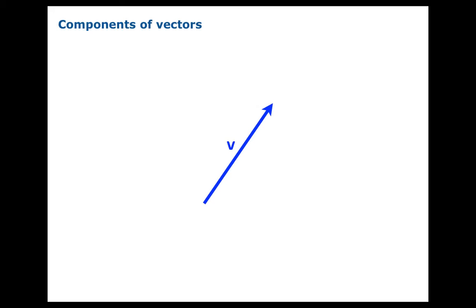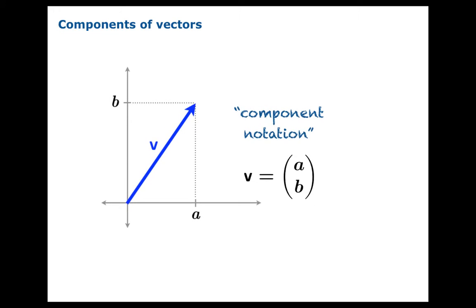If you were to place a vector so that the tail of the vector lies at the origin, then the tip of the vector would have coordinates. Those coordinates we will call the components of the vector. We could collect these components together into a column with parentheses on the outside — the horizontal component and the vertical component — and we'll call this component notation.